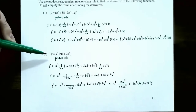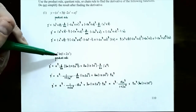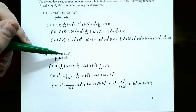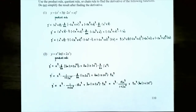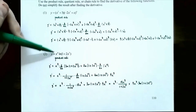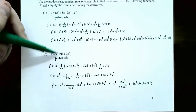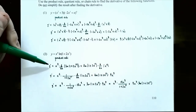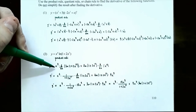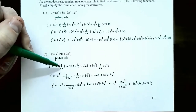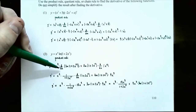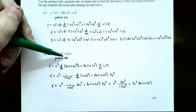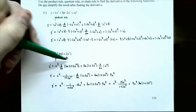Number 2: the function is y equals x to the fourth power times natural log of the quantity 1 plus 2x to the fifth. Again, notice that you have two different functions being multiplied together: x to the fourth as the first function, and natural log of 1 plus 2x to the fifth as the second function. So you have to use the product rule again to find its derivative. y prime is the first function unchanged, x to the fourth, times the derivative of the second function, d/dx of natural log of 1 plus 2x to the fifth.